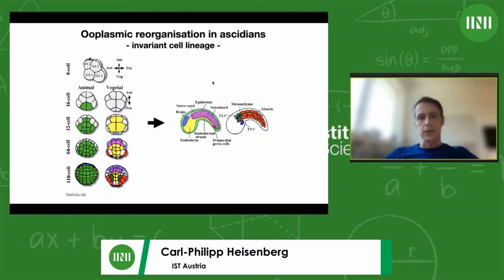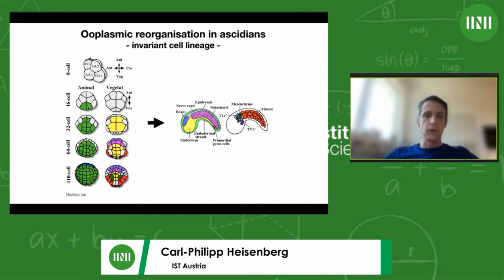Studying ascidians is also worthwhile because they have something which humans don't have: an invariant cell lineage. This means that the fate of each blastomere — shown here in green — can be exactly determined; it is essentially invariant. We know from each blastomere which organ and which tissue in the embryo and later in the adult organism is formed by that cell. This is a very useful feature.